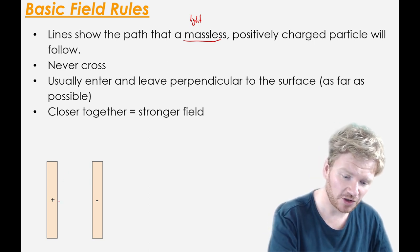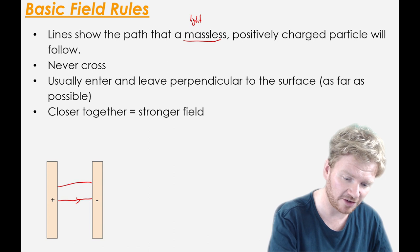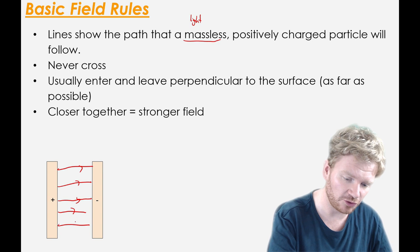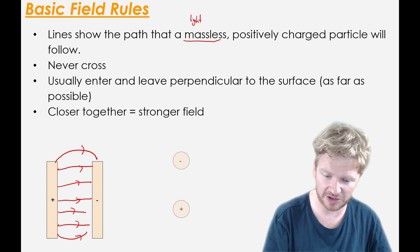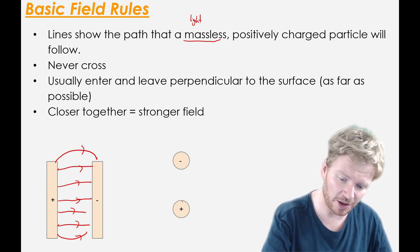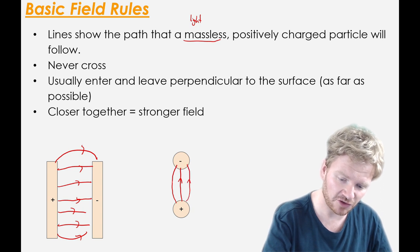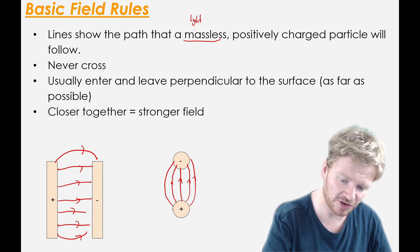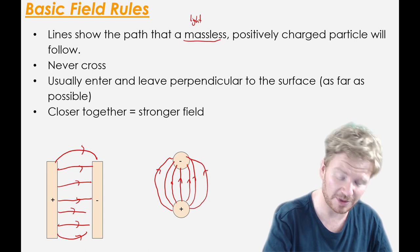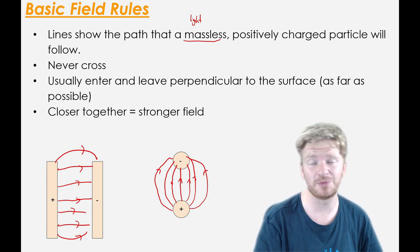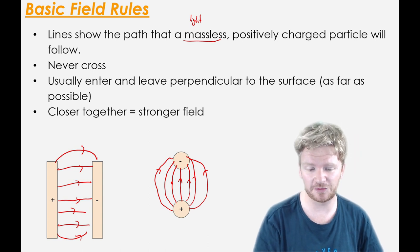Field lines always go from positive to negative. So for two parallel plates, we will get them being uniformly distributed, and then we may get some spillover at the sides. For two spherical particles, if you just remember that you have to start perpendicular to the surface and go positive to negative, it's kind of impossible to draw this wrong — though I literally have just drawn it wrong by letting them cross.